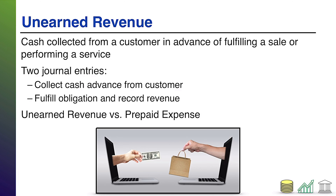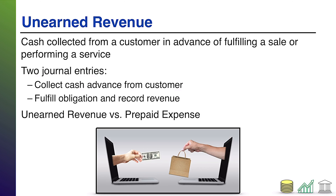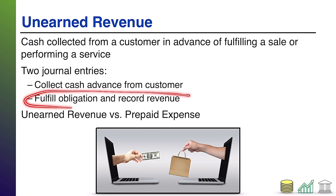Unearned revenue — another one you've seen before, but let's recap it. Unearned revenue is when you collect a cash advance from a customer and you still owe them something for that cash advance — that could be a product or a service. Usually we refer to it in terms of services because that's where it's most common: you owe them mowing their lawn, a consulting session. But it could be a product, like a monthly magazine subscription. There are basically two components to these transactions: the first is when you collect the cash advance from the customer; the second is when you fulfill your obligation and get to record revenue for fulfilling that obligation.